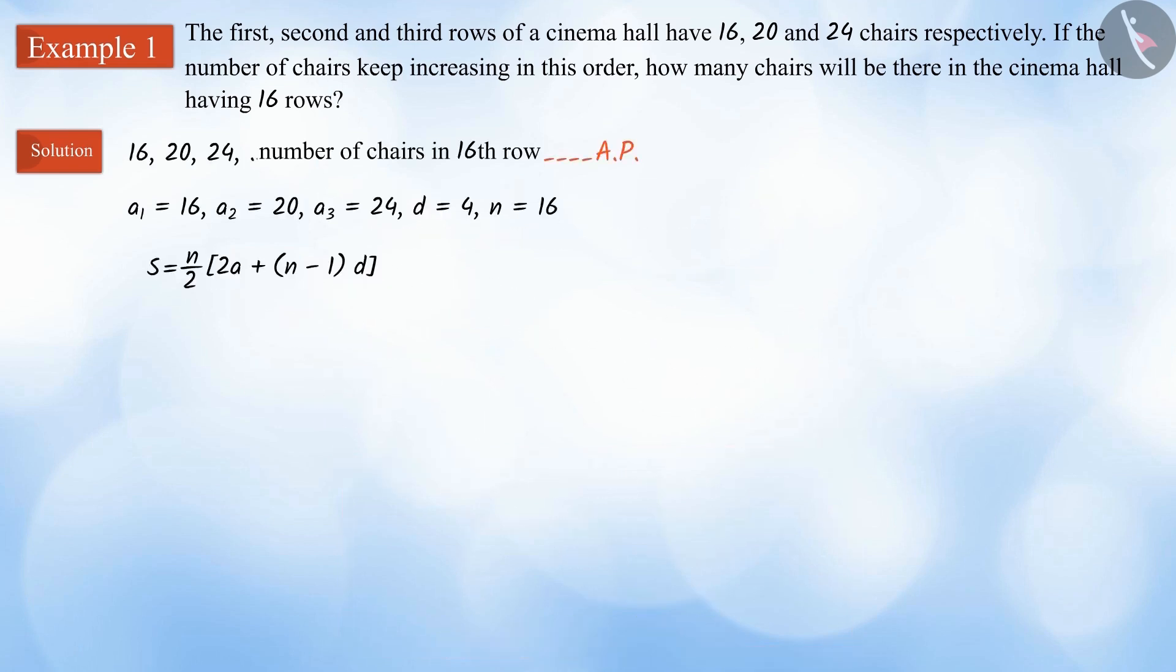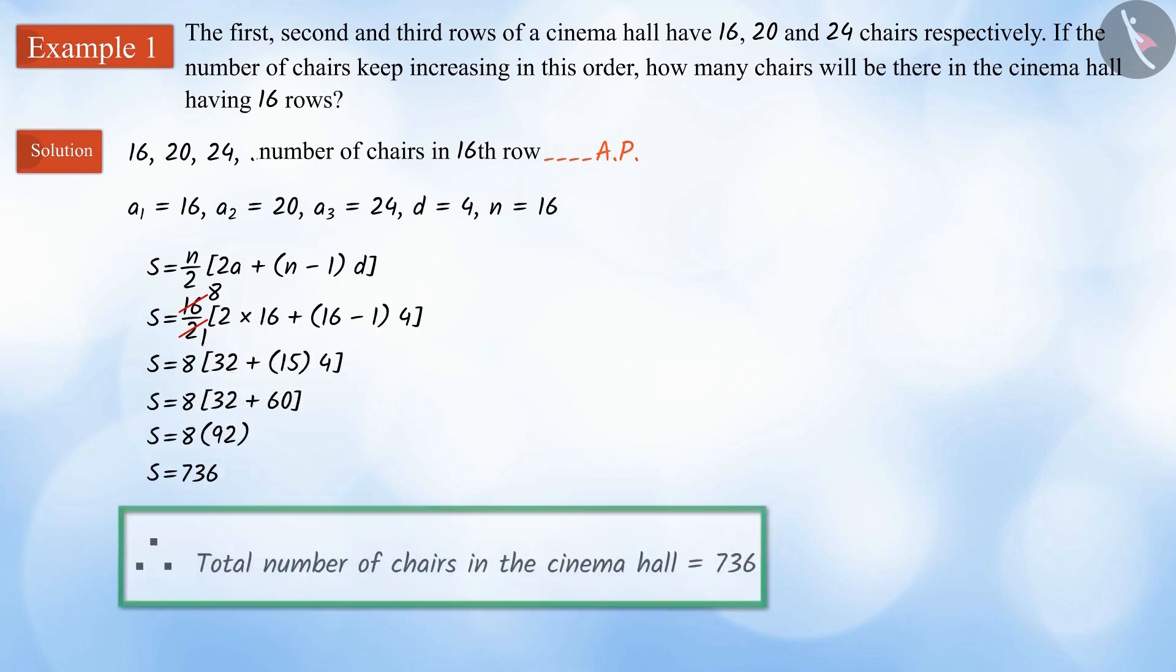Moving further, we substitute the values of a, n and d in this formula. On solving this, we get 736. Therefore, the cinema hall will have a total of 736 chairs.